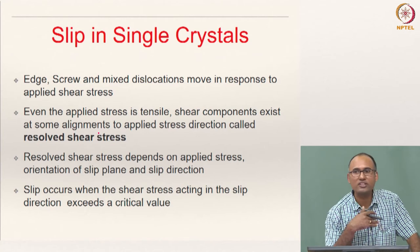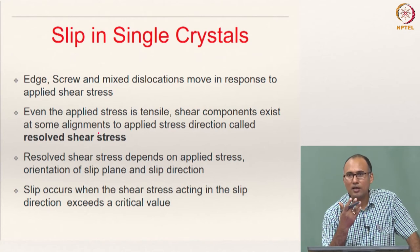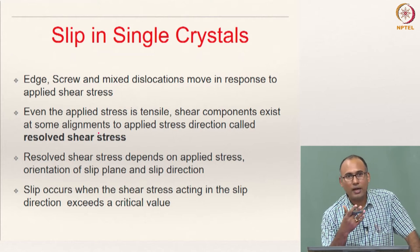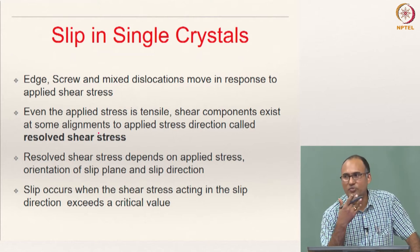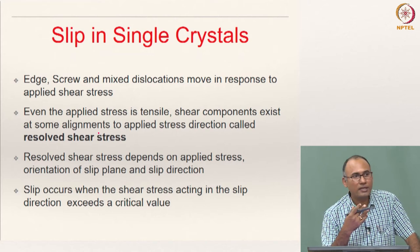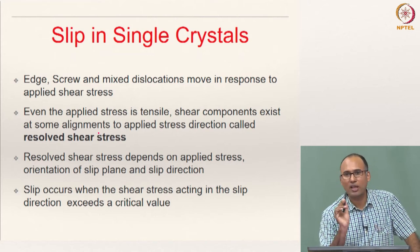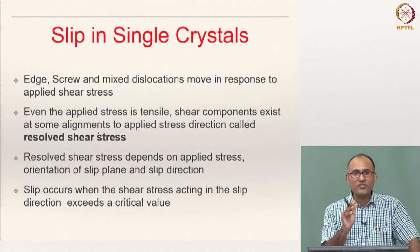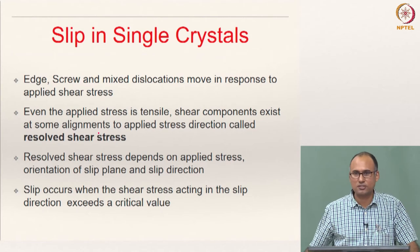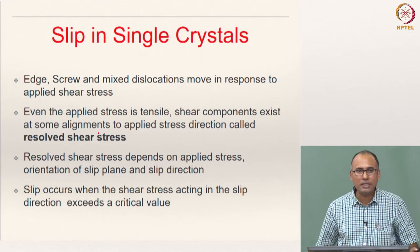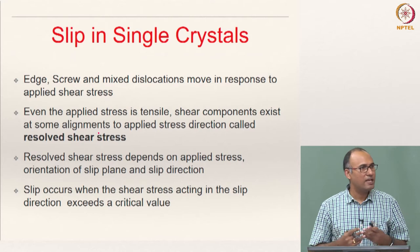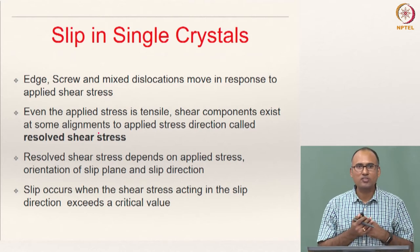There are some preferred planes and preferred directions, also called slip planes and slip directions, and together they are called a slip system. Dislocations move along preferential slip systems, and the slip systems are different for different crystal structures. FCC has 12 slip systems, BCC in total has 48, and HCP also in total has 12 slip systems.